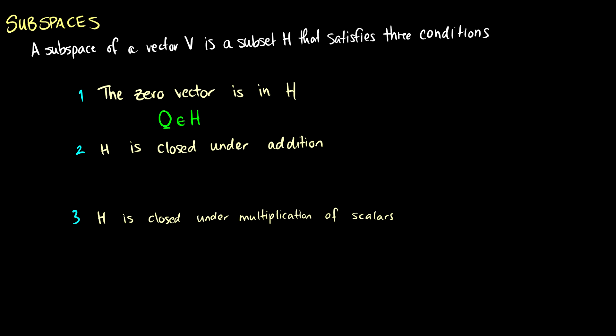The second condition: H is closed under addition. This means that if we take vectors U and V in H, then U plus V is also in H. And thirdly, H is closed under scalar multiplication. So if we have a scalar C in the real numbers, then C times U is also going to be in H.